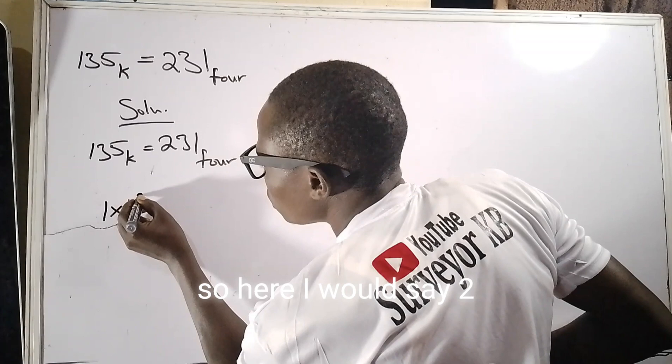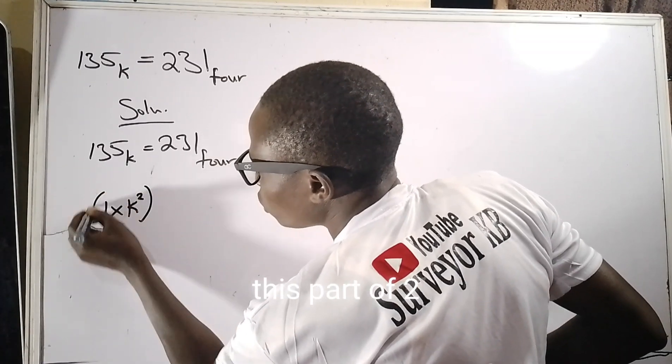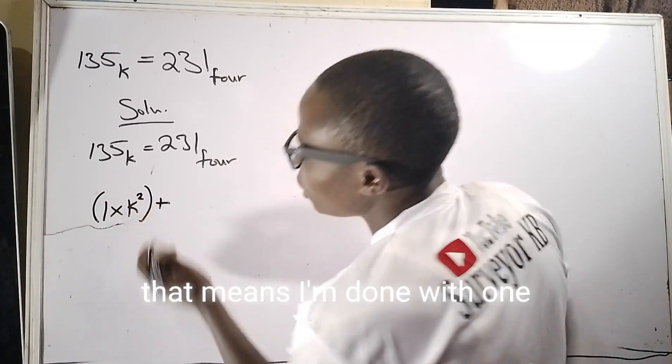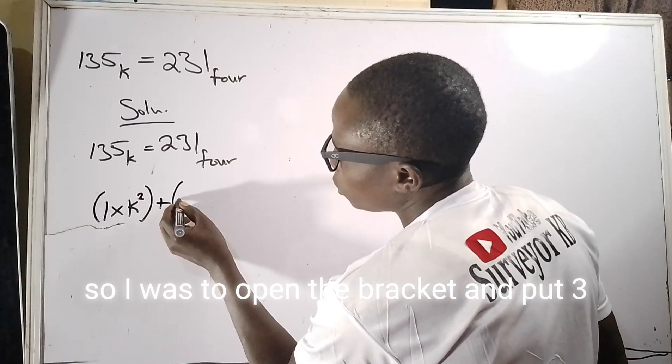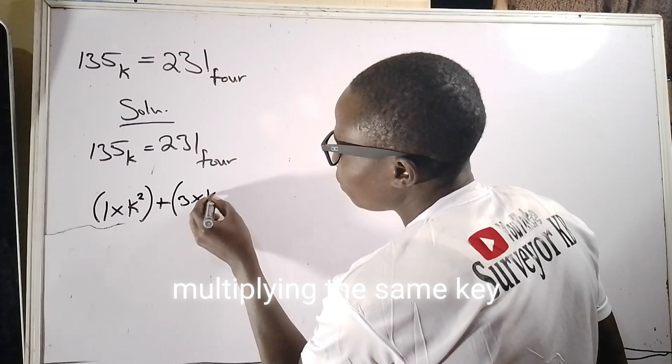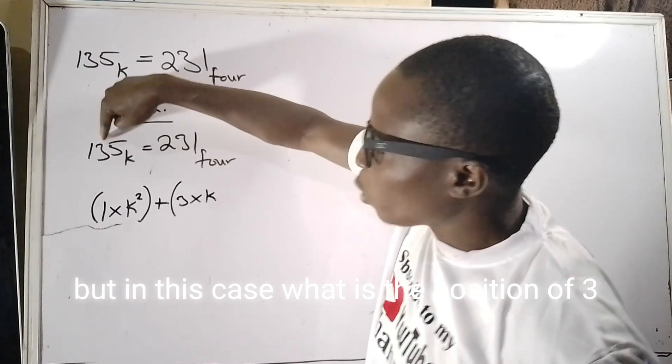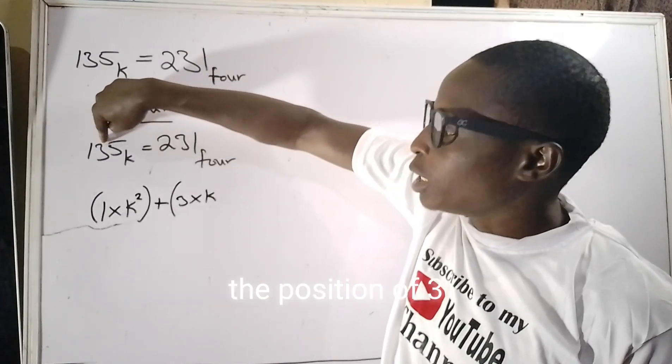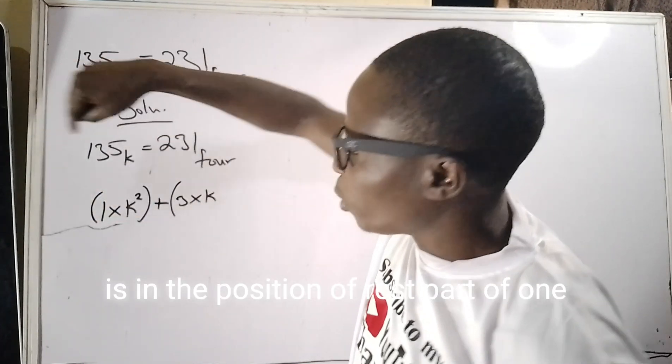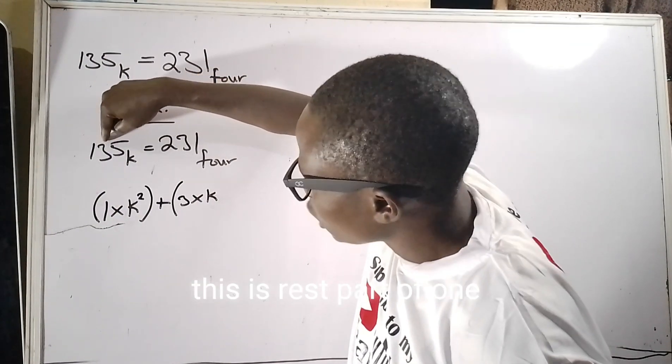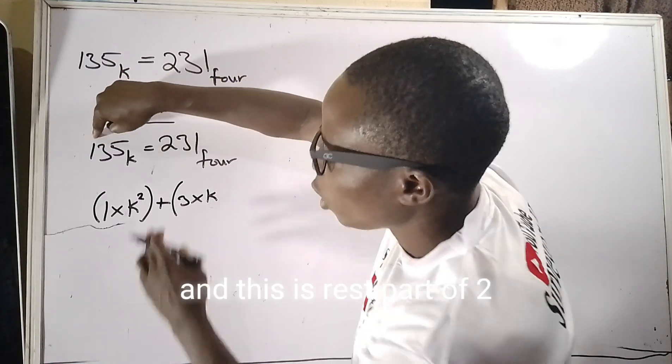So here I would say one raised to the power of two - that means I'm done with one. Then three: I will still open the bracket and put three multiplying the same k, but in this case, what is the position of three? The position of three is in the position of raised power of one because this is raised power of zero, this is raised power of one, and this is raised power of two.